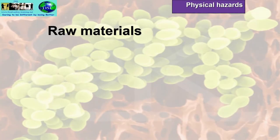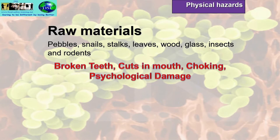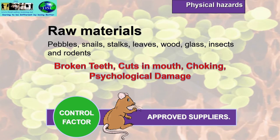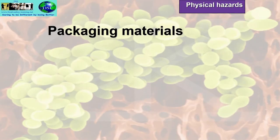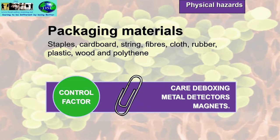Physical hazards can come from raw materials — pebbles, snails, stalks, leaves, wood, glass, insects and rodents — which can cause broken teeth, cuts in the mouth, choking and psychological damage. The control factor is to use approved suppliers. Physical hazards can also come from packaging materials such as staples, cardboard, string, fibres, cloth, rubber, plastic, wood and polythene. Control measures include careful deboxing, ideally in a separate area, and the use of metal detectors and magnets.